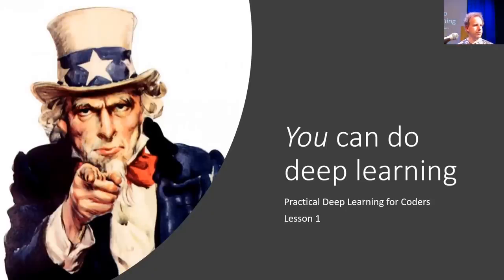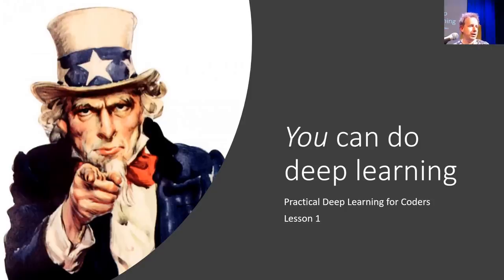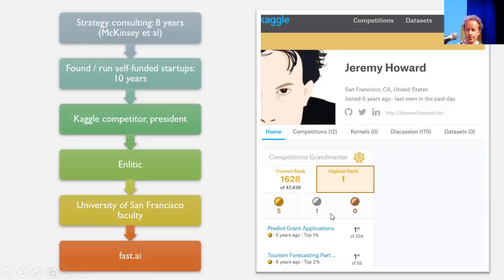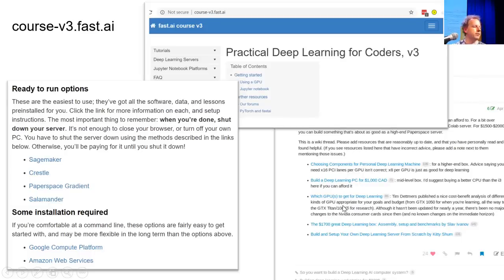At this point we've got our notebooks going and we're ready to start doing deep learning. The main thing we hope you'll agree at the end of this is that you can do deep learning regardless of who you are — and not just at a basic level, but at a world-class practitioner level. Your main place to look for things is course.fast.ai, where you can find out how to get a GPU, other information, and access our forums, including how to build a deep learning box yourself.